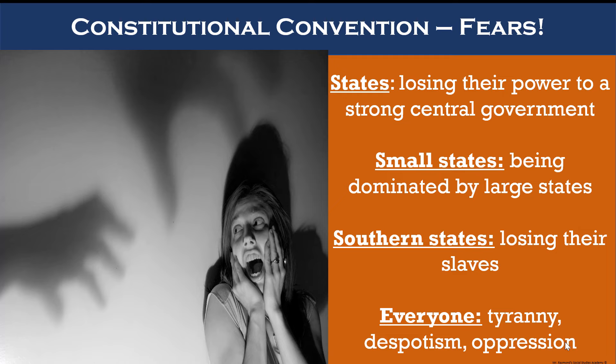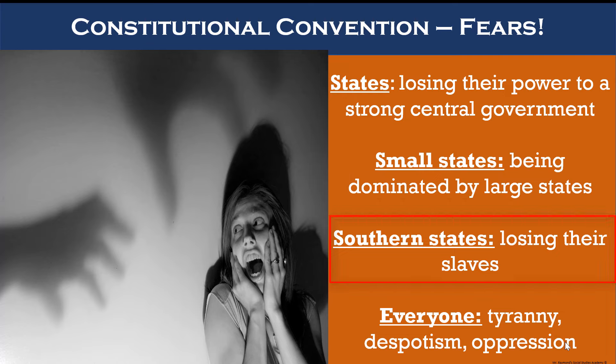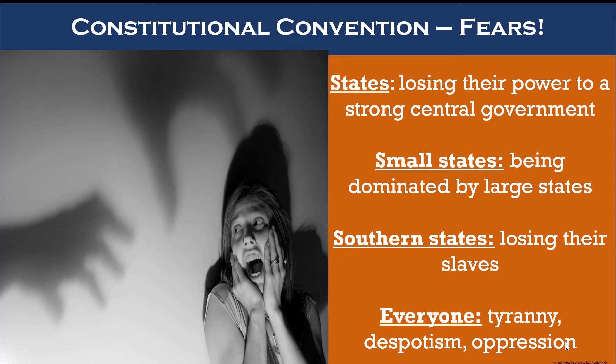Many of the delegates and the states they represented had trepidations about creating a more powerful central government. After all, they had just fought a war to overthrow one, and this was the reason the Articles were purposely weak. States, which had been used to governing themselves, were reluctant to hand over power to a new, more authoritative national government. Small states feared being dominated by large states, southern states feared that northern ones might want to do something about slavery, and everyone was afraid of the possibility of a return to a despotic national government that might abuse their rights, like they had been under the British.